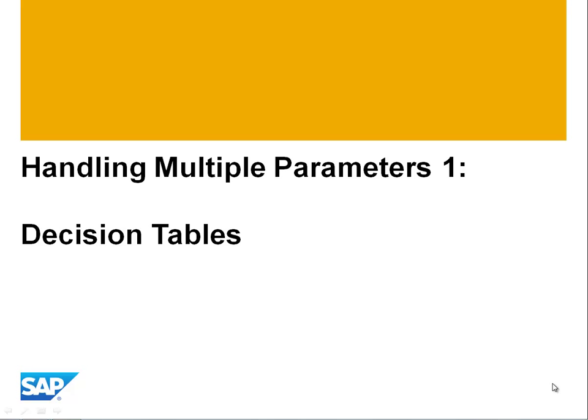We now come to the point in the test design where we have to consider multiple parameters. We've done equivalence classing and boundary values for each individual parameter, and now we have to consider if the program behaves correctly for all parameters considered together. The first technique we're going to be looking at is decision tables.